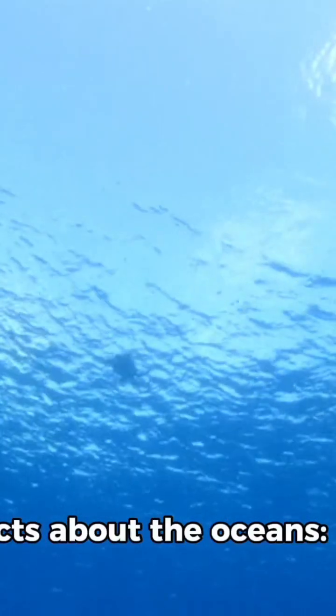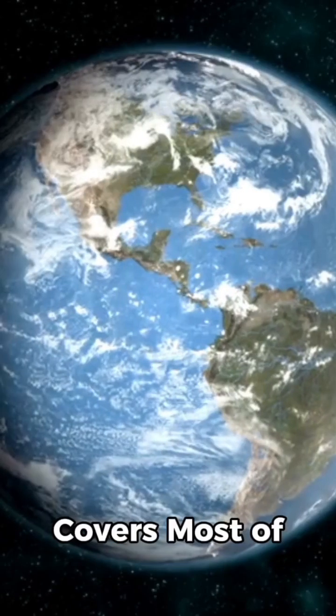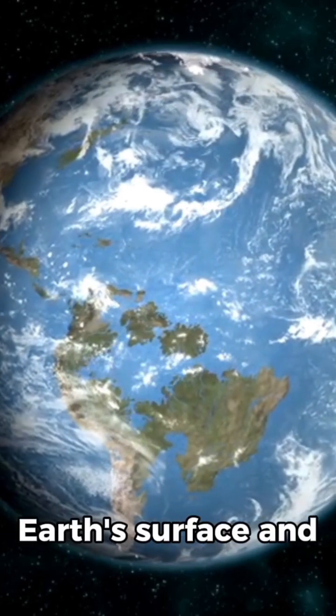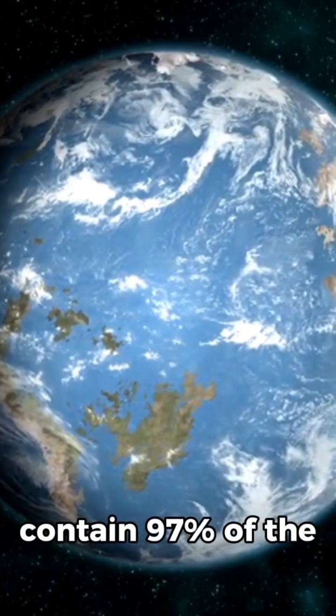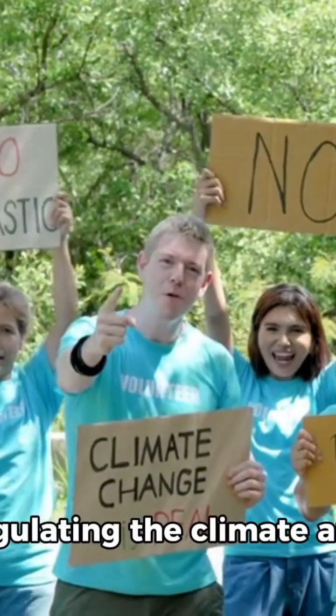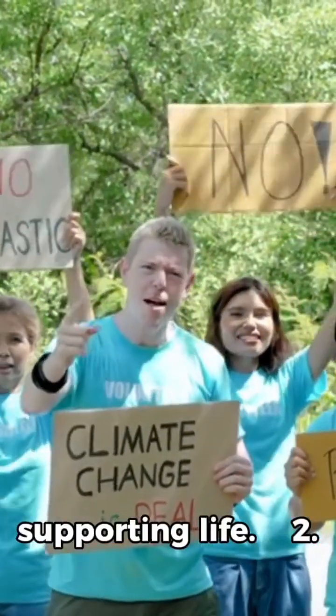Here are 10 fascinating facts about the oceans. 1. Covers most of Earth - the oceans cover about 71% of Earth's surface and contain 97% of the planet's water. They are crucial for regulating the climate and supporting life.